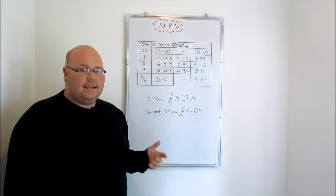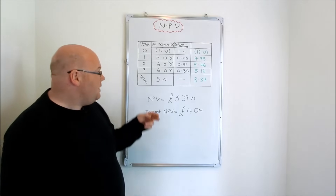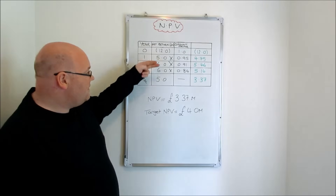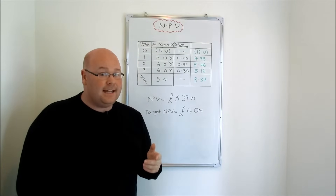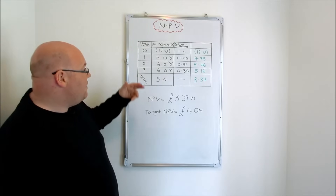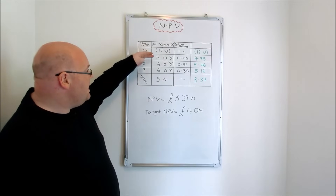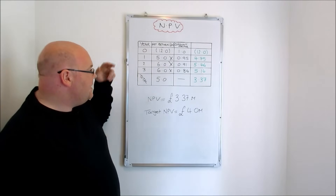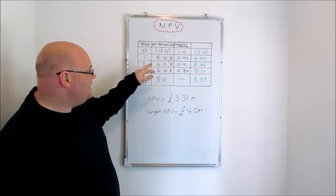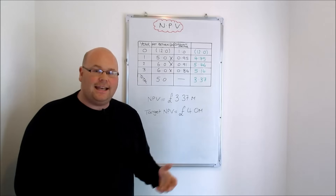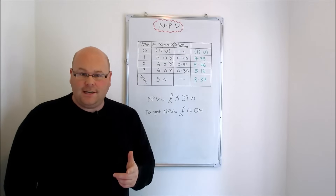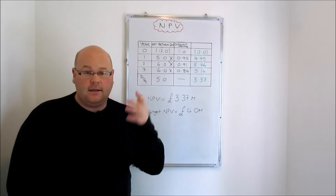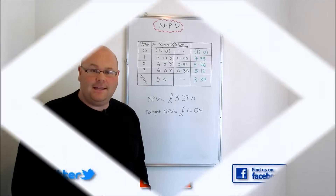Despite that criticism, NPV is at least a method that takes into account the full years of a project's life — the payback method didn't do that. And it takes account of the fact that money earned earlier is of more value than the same amount earned later — the ARR method didn't do that. Good luck with your revision — we'll see you soon for more tutorials.